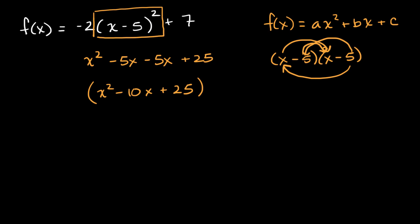And then I'm going to multiply that by negative two, and then I'm going to add seven. So all of this is going to be equal to f of x. So what's this going to be equal to? Well, let's take our negative two and distribute it onto each of these terms.